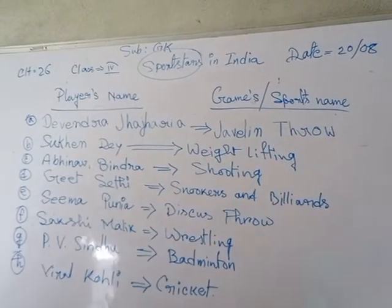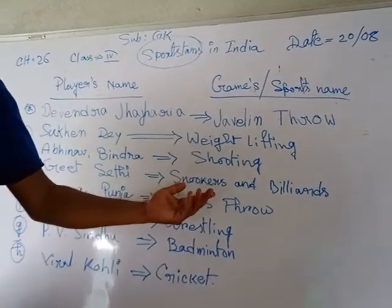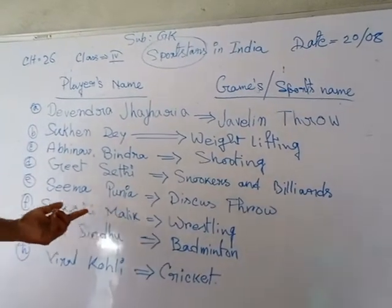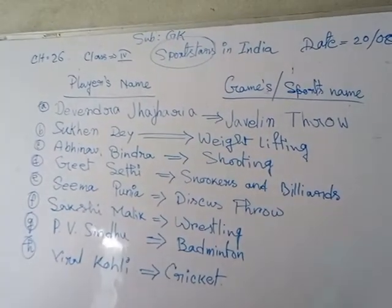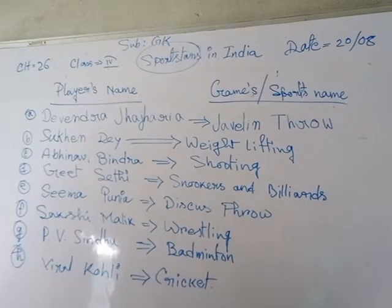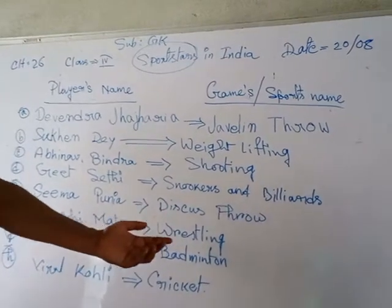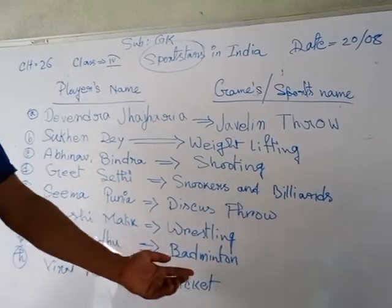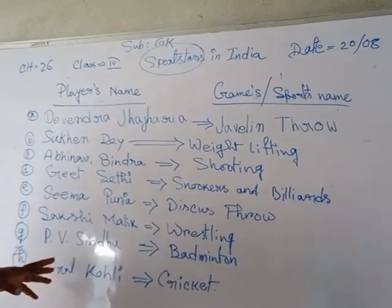Snooker and billiards — you play in a standing position, touching the ball to fill up the target. Seema Punia plays discus throw — discus is like a disc, and when you throw it, it is called a discus throw. Sakshi Malik plays wrestling. PV Sindhu is the badminton player and sports star of badminton.